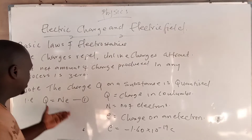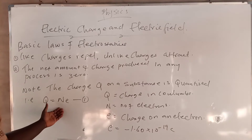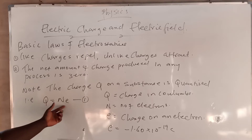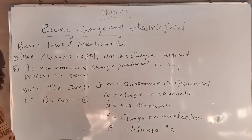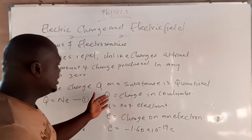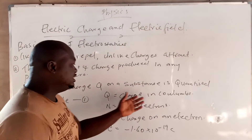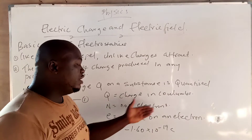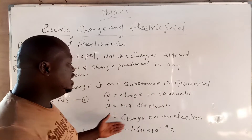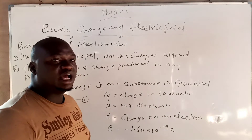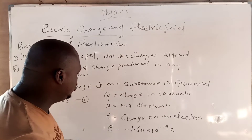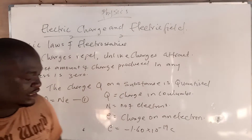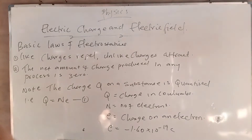Look at this equation here. The charge is equal to N times E, where Q is the charge in coulombs, N is the number of electrons, and E is the charge of an electron. The charge of an electron is 1.6 times 10 raised to the power of minus 19 coulombs.